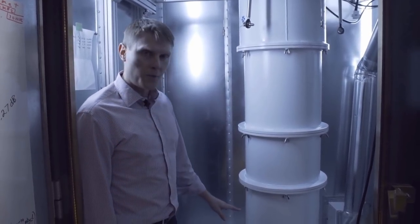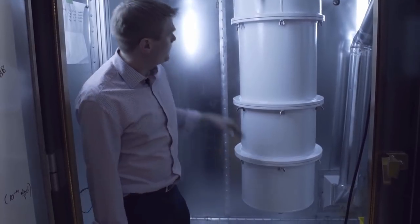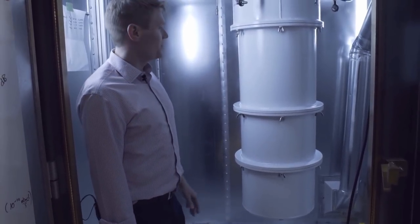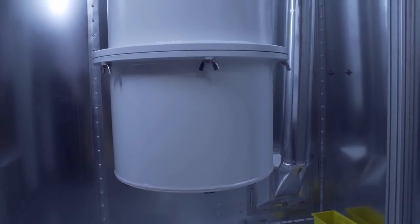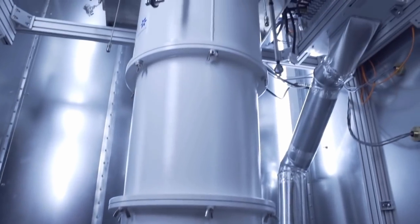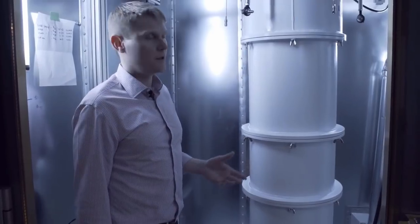The chip itself, the quantum processor, is sitting at the bottom of this array of shields. And this is again the first of several more layers. Inside these shields is vacuum, which is the insulation of the cooling system.